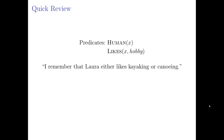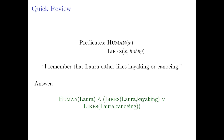Now let's talk about hobbies. "Laura either likes kayaking or canoeing." How do I say that in predicate logic? I would assert two things: human(Laura), and likes(Laura, kayaking) or likes(Laura, canoeing). Keep in mind Laura could like both and this would still be true—it's an inclusive or. So first, Laura's human; second, she likes one or the other or both.